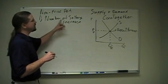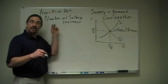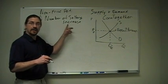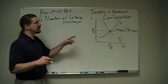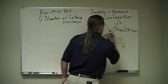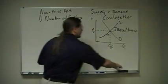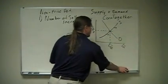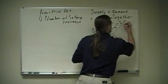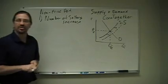Well, what happens when you increase the number of sellers? Well, this is one of those non-price-determinants for supply. The number of sellers is increasing, so supply increases. The supply curve moves to the right. Here is our new supply curve with the dashed line.